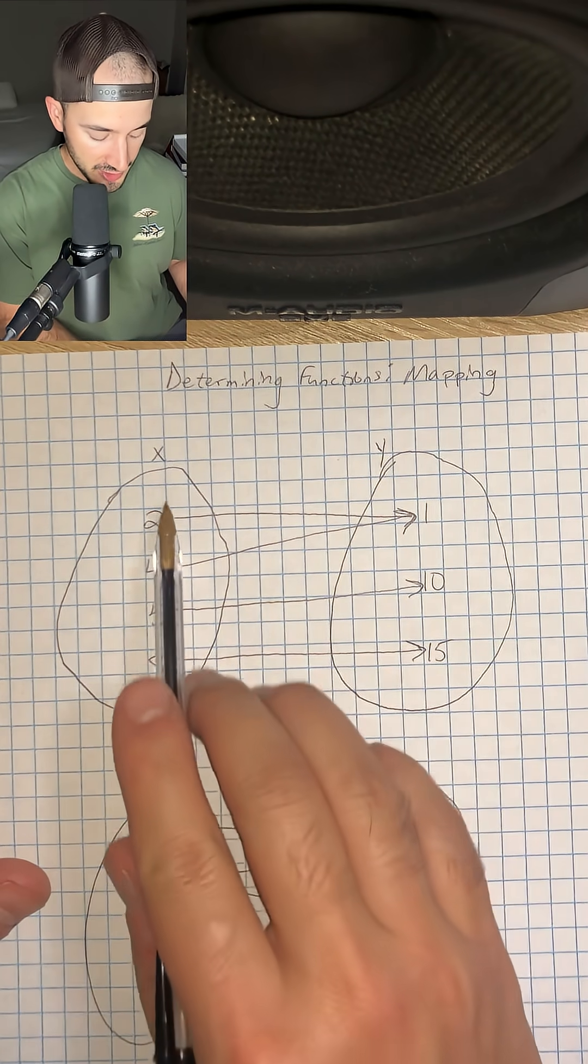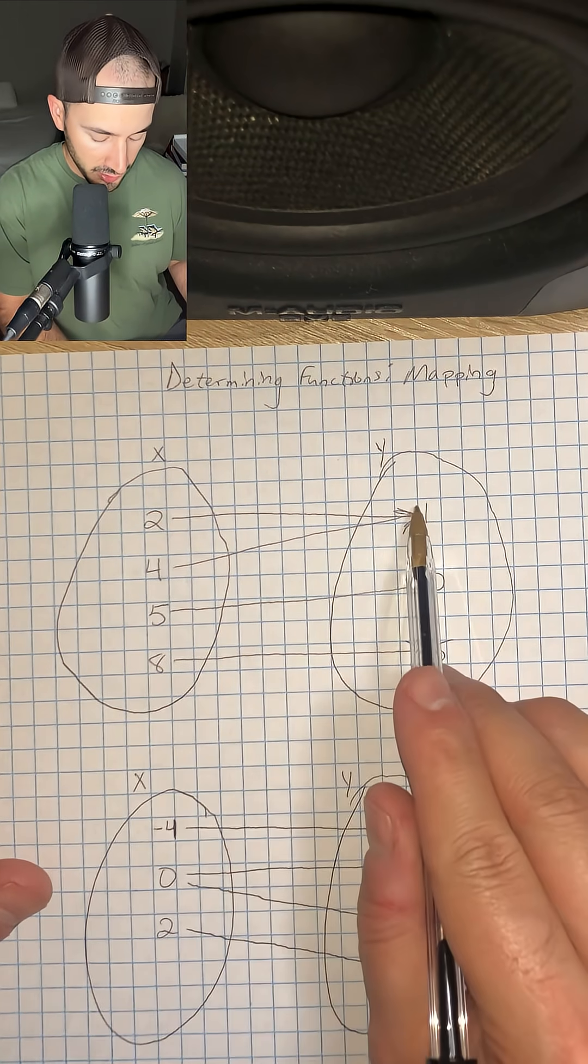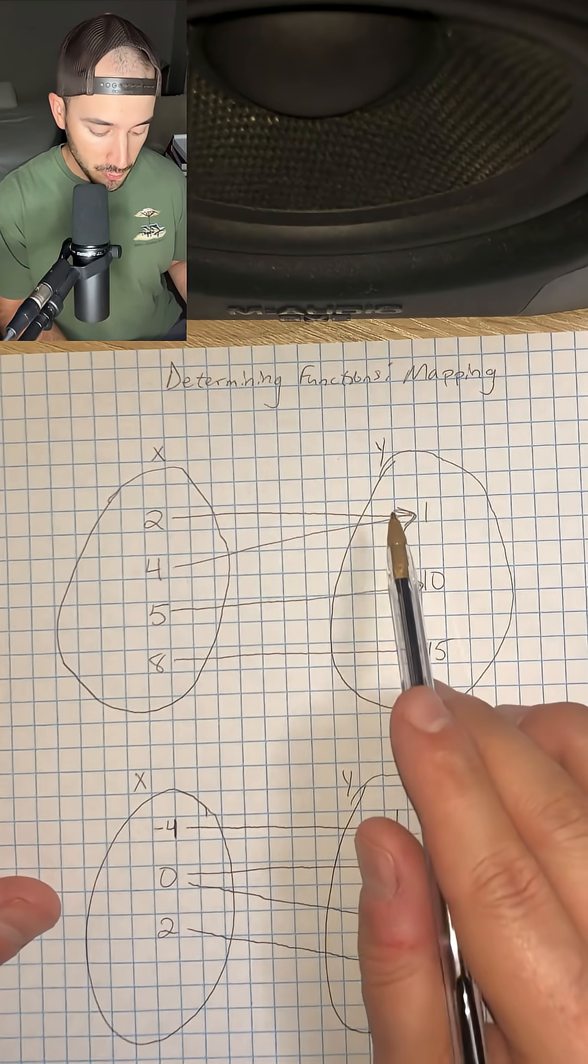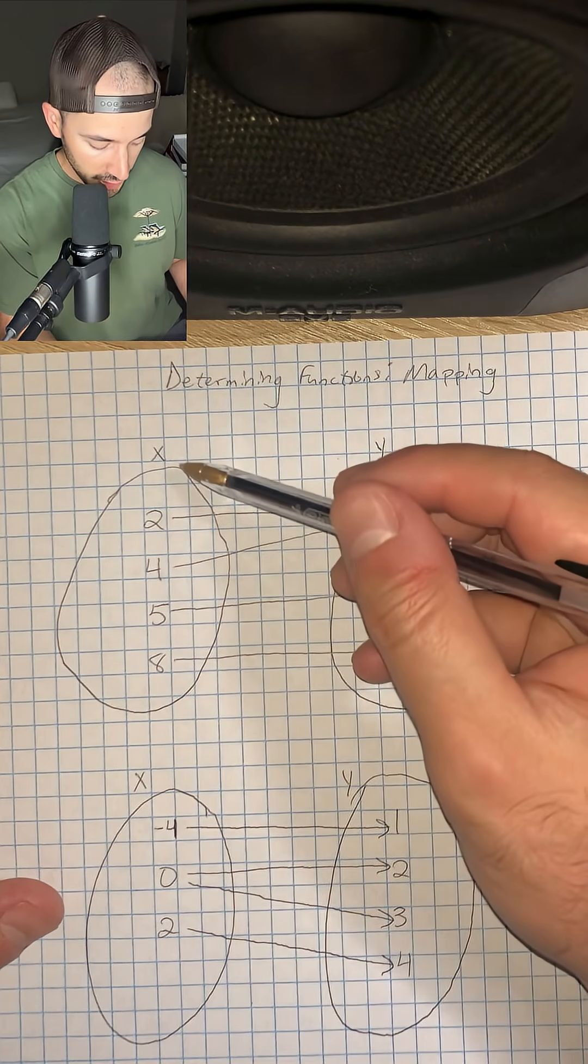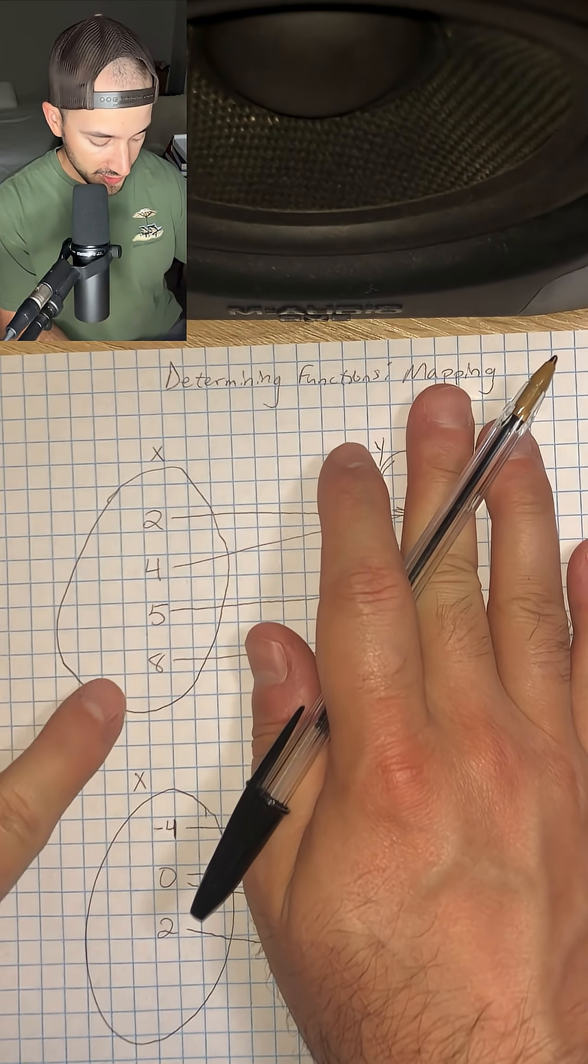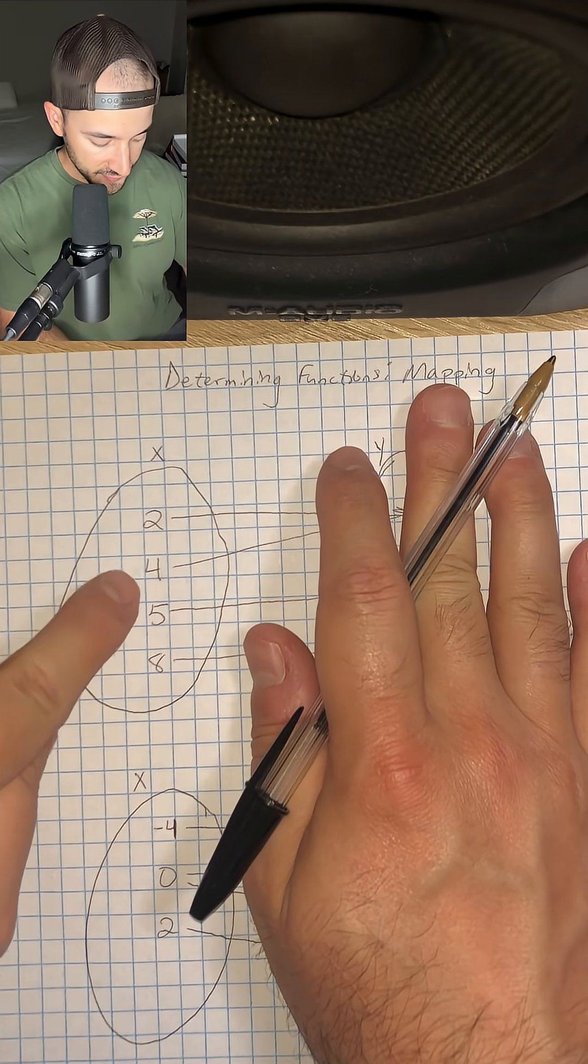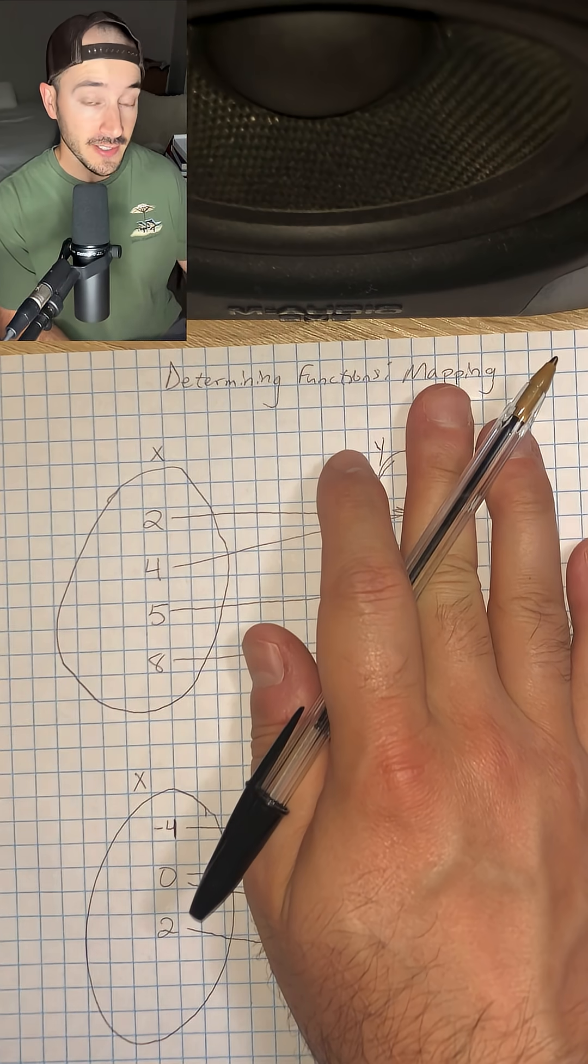Each x value or input is matched with an output or a y value. The way that we can easily tell if a mapping is a function is that we look over here at the left side and look at our x values and say, does each x value only have one arrow or one line leaving it?